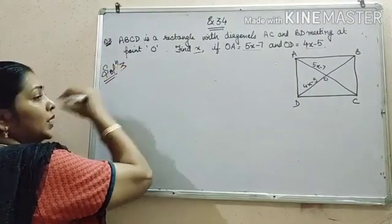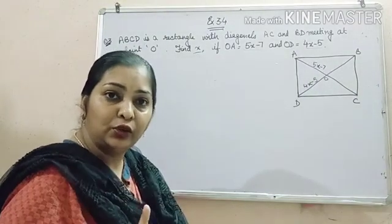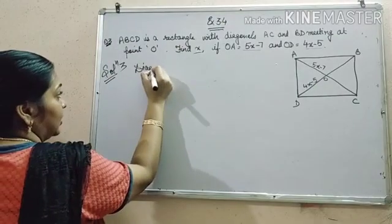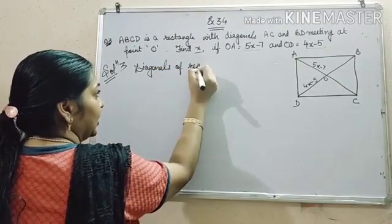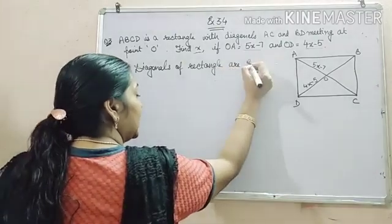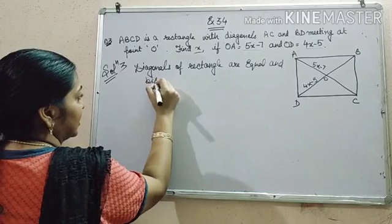we will use the property of rectangles for the diagonals. The diagonals of a rectangle are equal and bisect each other.